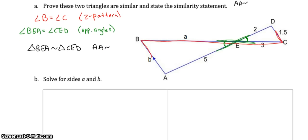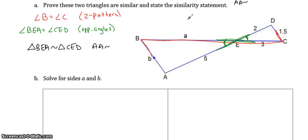So now to solve for sides A and B. If we want to write out our three ratios, so BE goes with CE. So BE is A, CE is 3, EA goes with ED, so that's 5 over 2. And BA goes with CD, so that's B over 1.5.